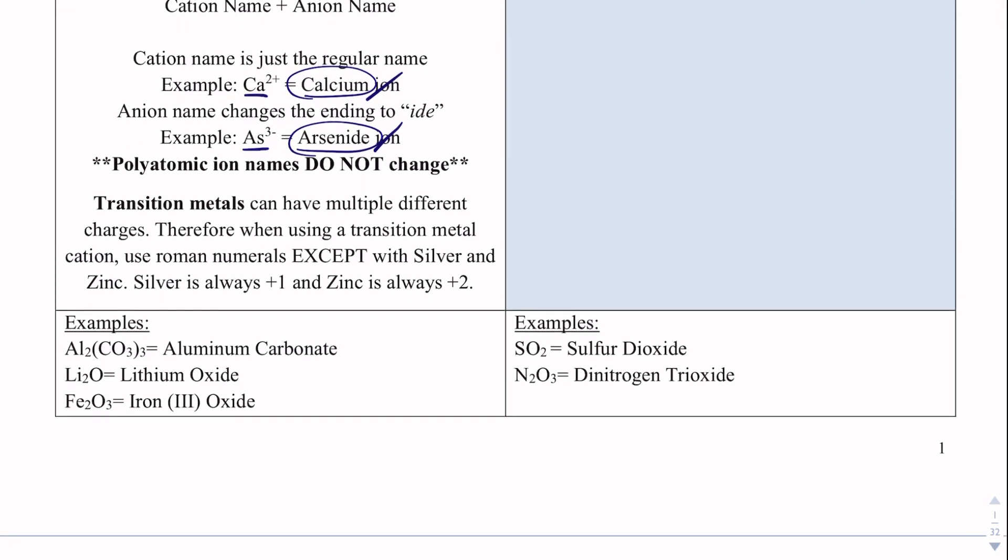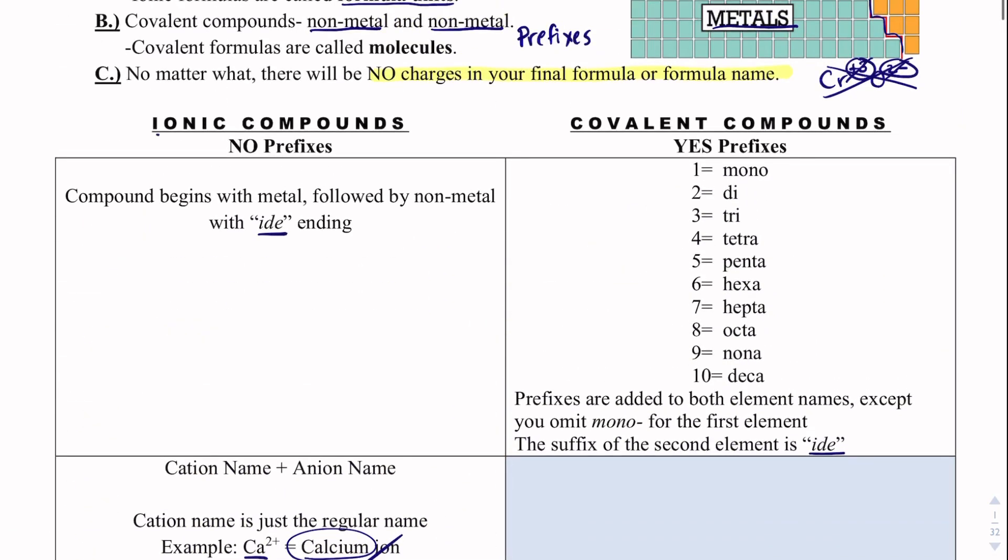Now, with transition metals, we will have Roman numerals. There are a few exceptions, like silver and zinc, and we'll see these. With polyatomic ions, you should have that list pretty close to memorized by now. If you don't, you still need to be working on that. But polyatomic ions always bond ionically. And then the names of a polyatomic ion, and I'm not going to write it because I've highlighted it here, they do not change. This makes sense to me. Polyatomic ions are, of course, ions, and ions bond ionically.